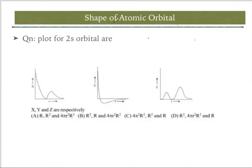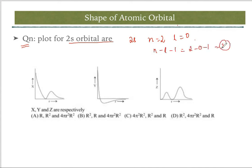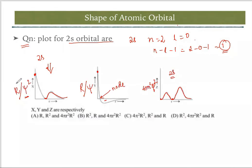Now let's solve a question: identifying the plot type for 2s. First, calculate nodes: for 2s, n = 2, l = 0, so nodes = 2 − 0 − 1 = 1. The first graph starts from a higher point, touches the x-axis once, and goes up to infinity with no negative graph — this means it is r² or ψ².